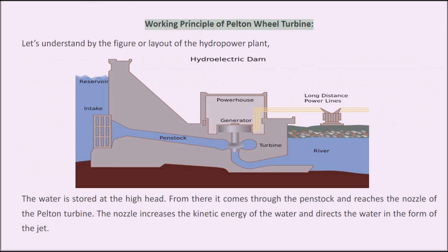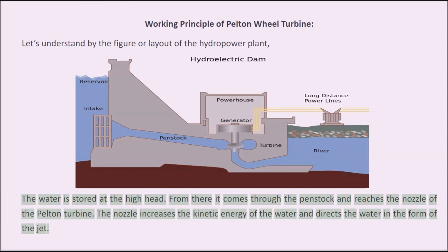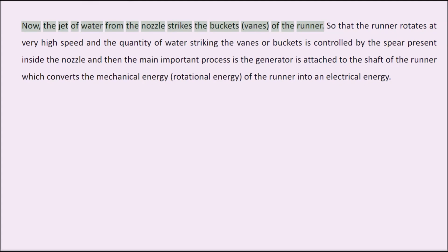Working principle of the Pelton wheel turbine: The water is stored at a high head. From there it comes through the penstock and reaches the nozzle of the Pelton turbine. The nozzle increases the kinetic energy of the water and directs the water in the form of a jet. The jet of water from the nozzle then strikes the buckets and vanes of the runner.